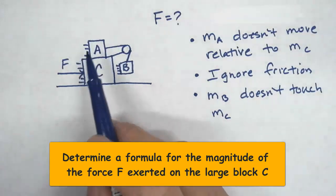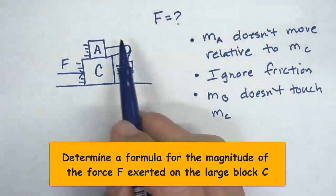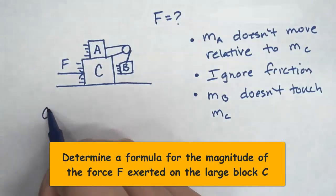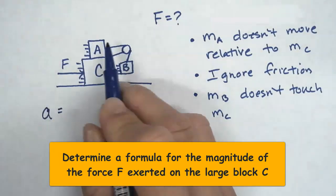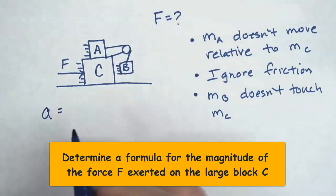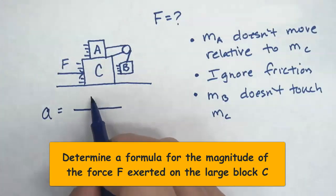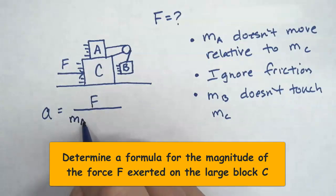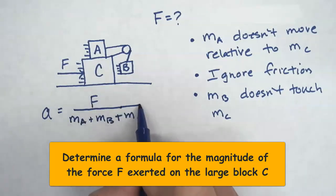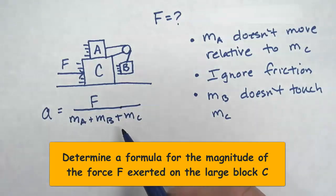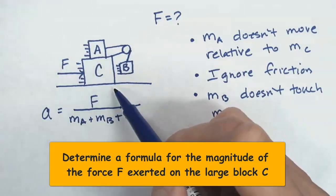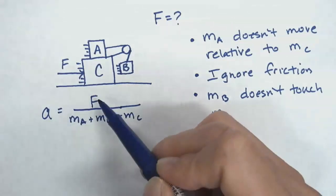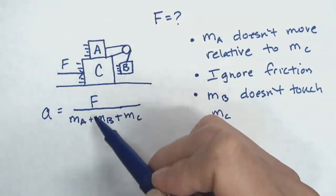I'm going to start by looking at the whole system. If I make A, B, and C my system, the acceleration equals the force divided by the total system mass: M_A plus M_B plus M_C. This is simply Newton's second law applied to all three boxes together, so the acceleration is the applied force divided by the total mass.